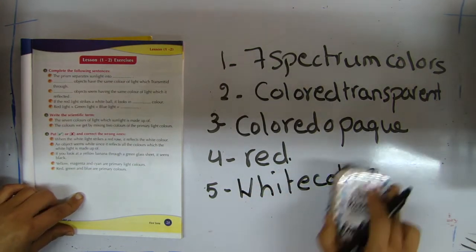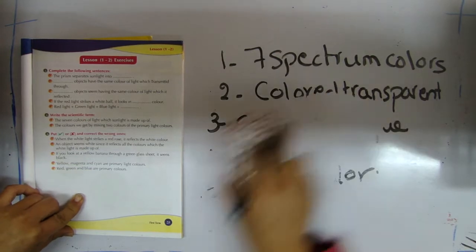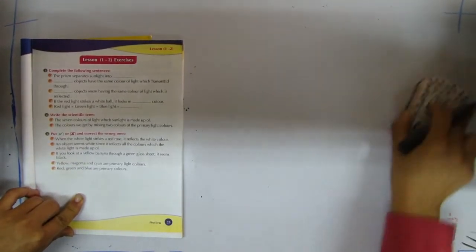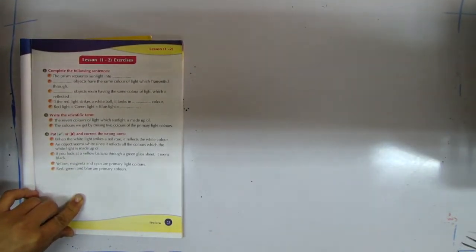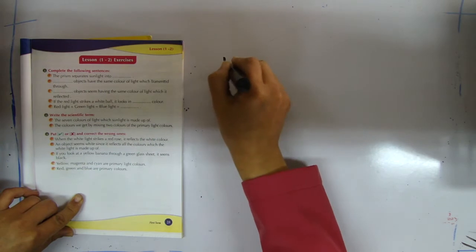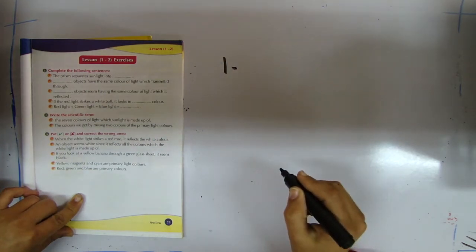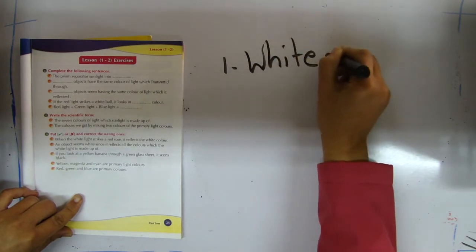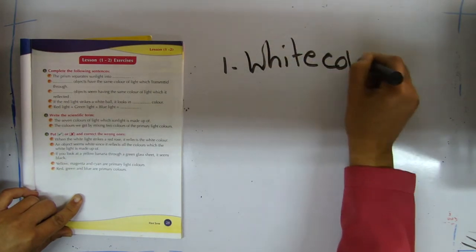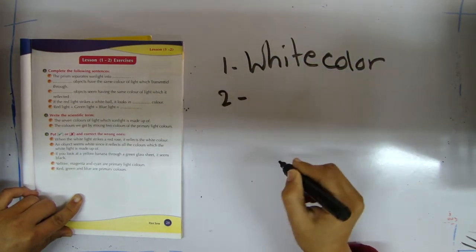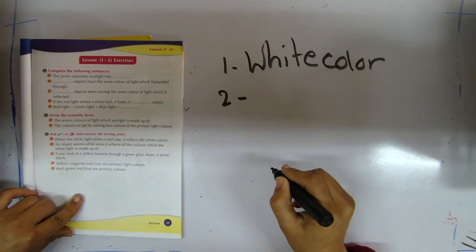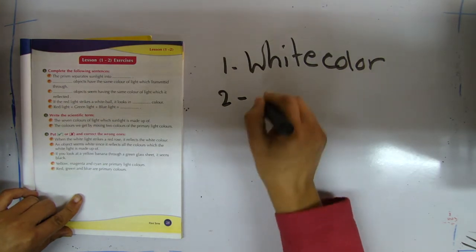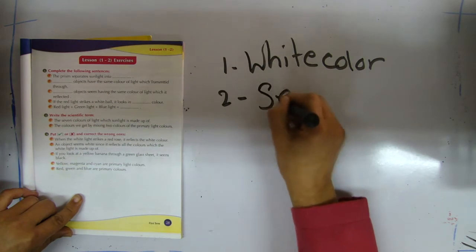Question number two: scientific term. Number one: the seven colors of light which sunlight is made up of is white color. Number two: the colors which are obtained by mixing two colors of the primary light colors is called secondary color.